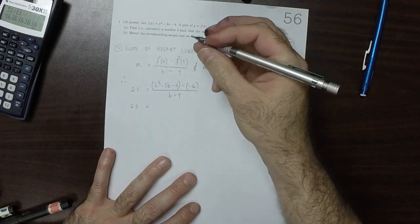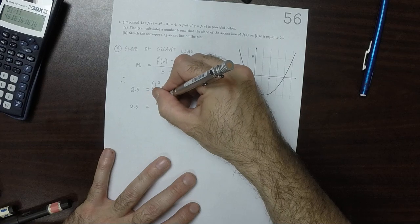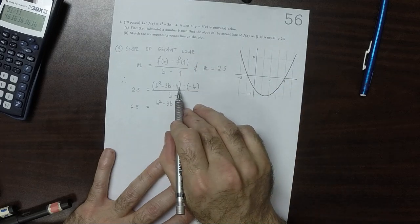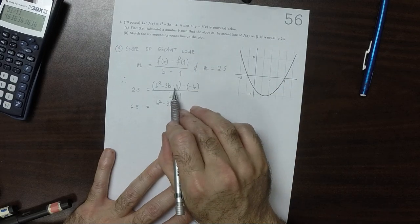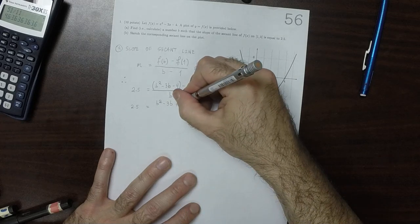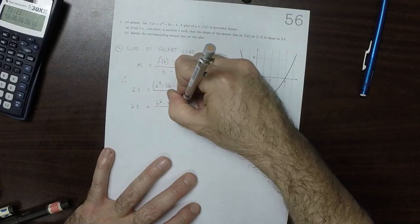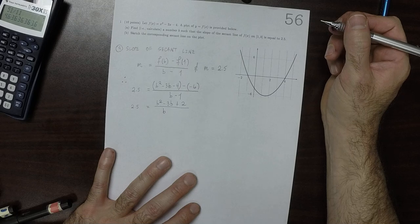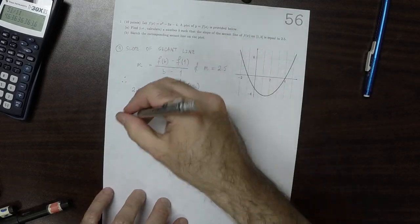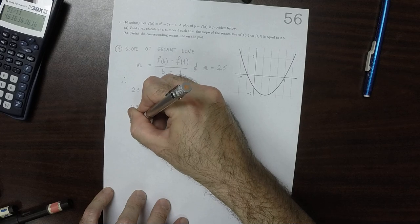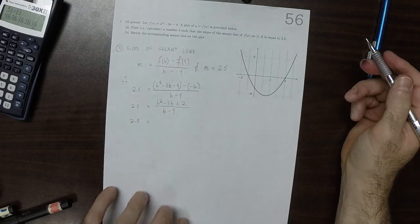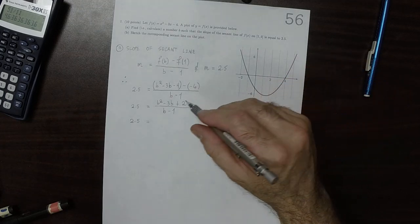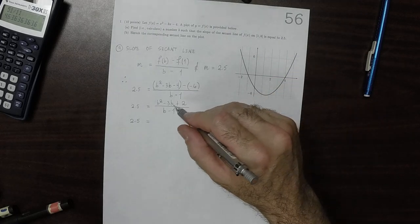So 2 and 1 half is b squared minus 3b minus 4 and then minus negative 6. So that'd be negative 4 plus 6. So that'd be plus 2 over b minus 1. So then 2 and 1 half is equal to, well, does that numerator factor? Can you think of two numbers whose product is positive 2 and whose sum is negative 3?